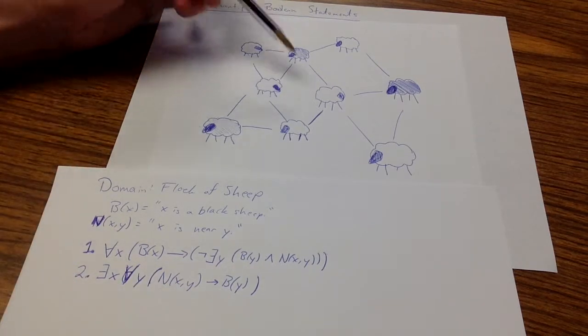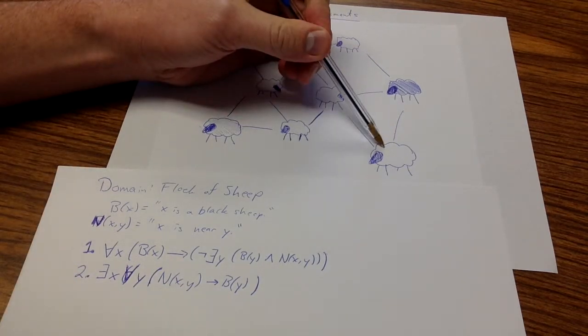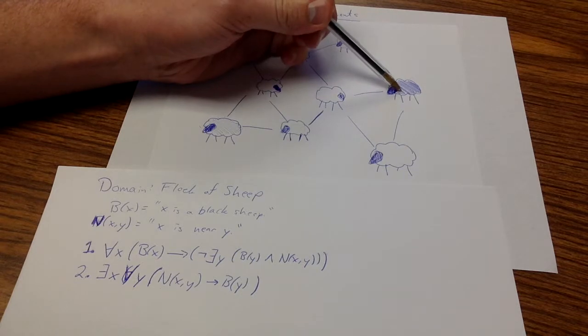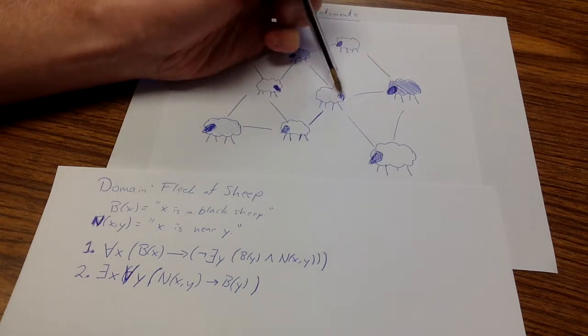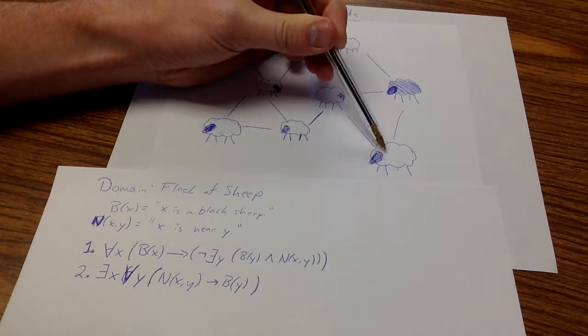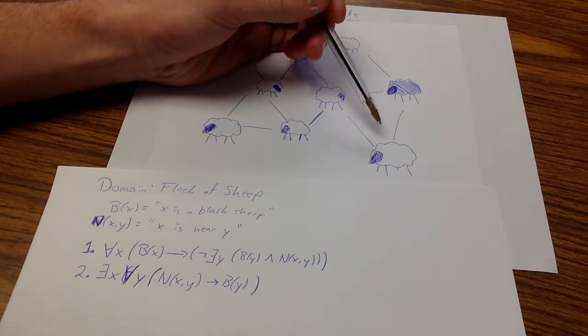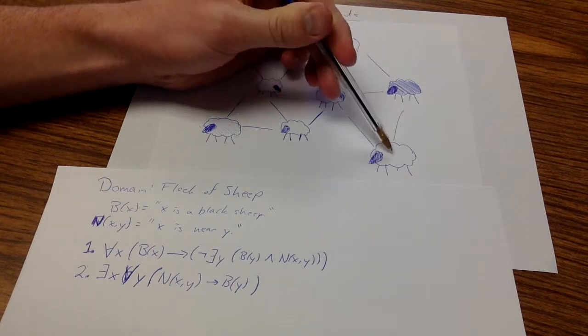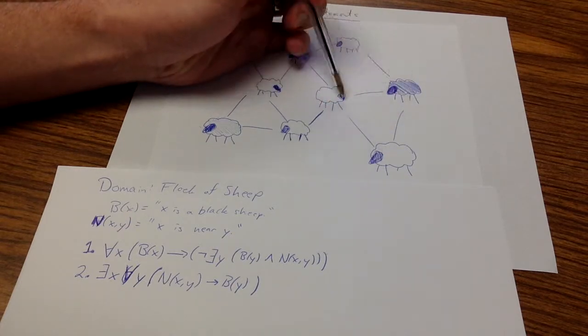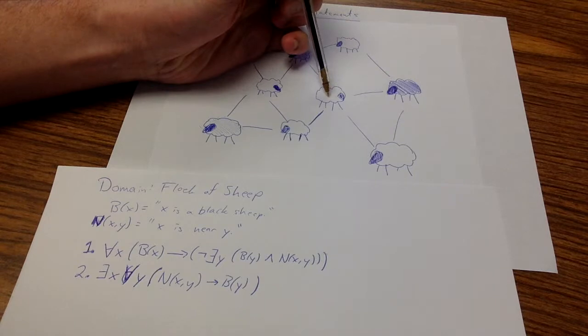So this is saying things like, look at this sheep. It says, well, if this guy is nearby, he must be black. That part is true. However, this sheep here is near this sheep but is not black. Therefore, this sheep is a counterexample to the statement that for all y being near, where this is x, for all y being near x implies being black.